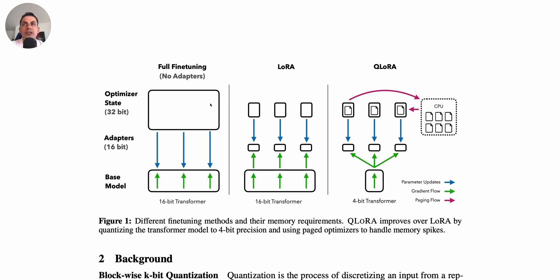An alternative to full fine-tuning is to use a technique called LoRA, which was introduced a few years ago. It's a parameter-efficient fine-tuning method which basically embeds a small number of additional parameters at key locations of the base model. You freeze the base model, add these extra parameters, and fine-tune only those parameters on your dataset.